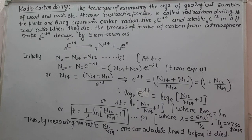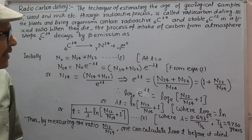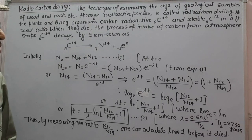The age of geological samples of wood, rock, and fossil through radioactive process is called radiocarbon dating. All plants and living organisms contain radioactive carbon C-614 isotope and stable carbon C-612 in a fixed proportion. When they die, the process of intake of carbon from the atmosphere stops.